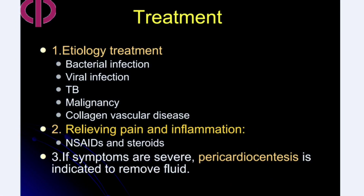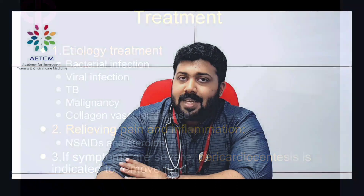Treatment of acute pericarditis begins with treating the underlying etiology — identifying and treating bacterial, viral, or TB infection, or managing malignancy or collagen vascular disease. Pain is relieved with NSAIDs, colchicine, or steroids. If symptoms are severe and causing hypotension or cardiac failure, pericardiocentesis should be performed as it is both diagnostic and therapeutic.